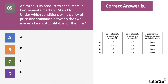Question number five. A firm sells its products to customers in two separate markets M and N. Under which conditions will a policy of price discrimination between the two markets be most profitable? This question is about price discrimination as a strategy — you're looking for a difference in the elasticity of demand, so it's going to be C or D. To make it most profitable, you've got to prevent people paying the low price from reselling to people in the higher-price market. That's easier if the geographical distance between the markets is large. The correct answer is C.